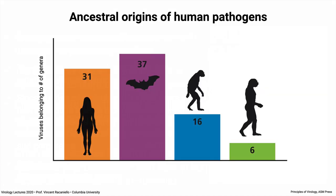Every human virus we have today originated in a non-human source. This graphic shows viruses belonging to different genera. Viruses belonging to 31 genera are human viruses — this includes measles, herpes viruses, mumps, rhinoviruses. They once originated in animals, but now they're human viruses.